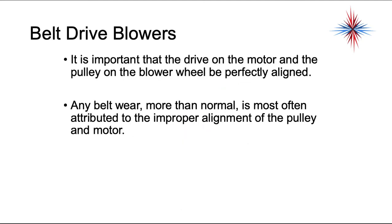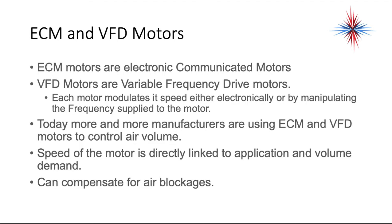It's important that on belt drive blowers, the drive and the motor on the pulley are perfectly aligned. You can't have any offset because the belt will start wearing. Any belt wear more than normal is often attributed to improper alignment of the pulley and motor. You don't want to have to go out and replace belts on negative 10-degree days on a roof.